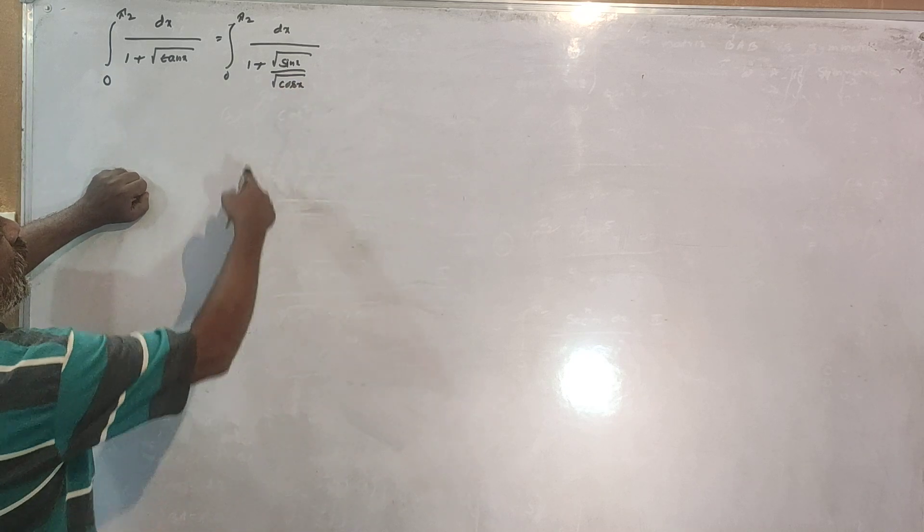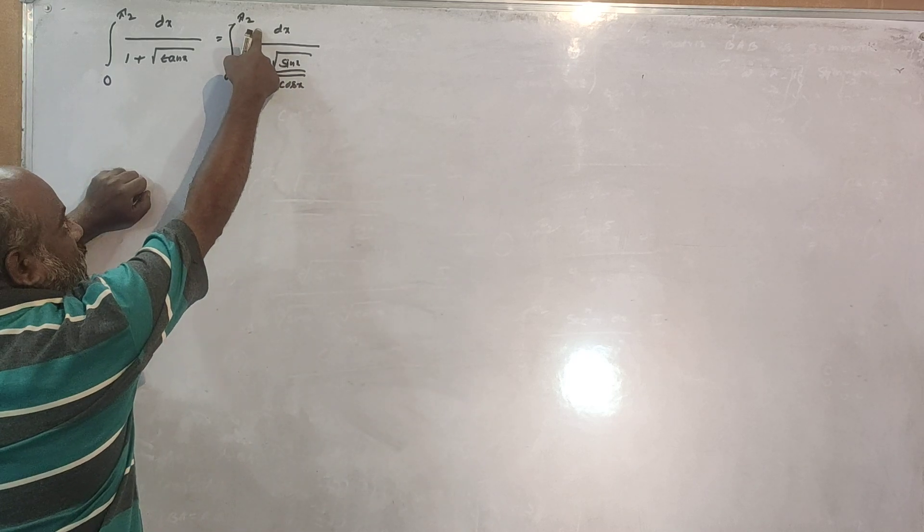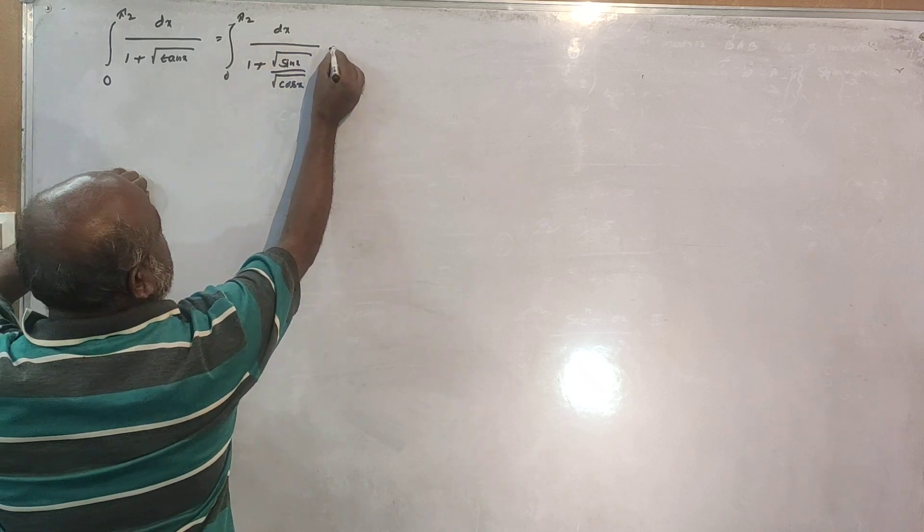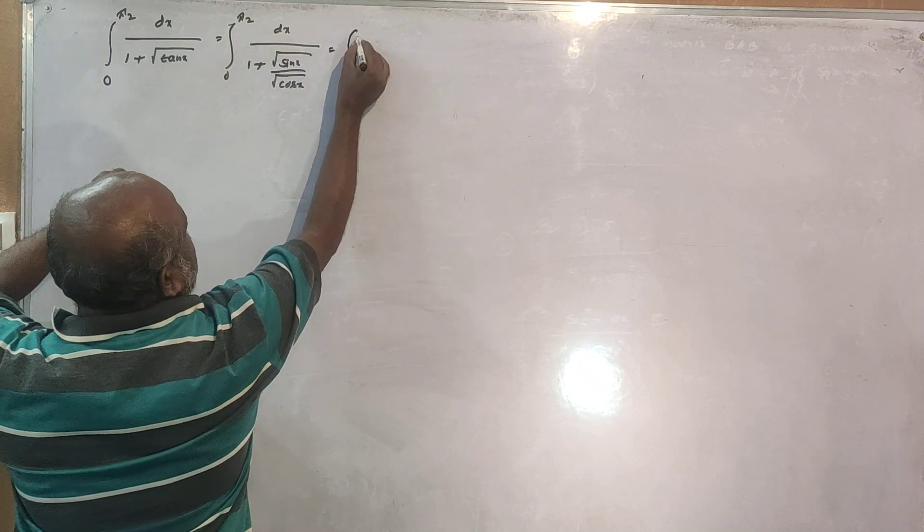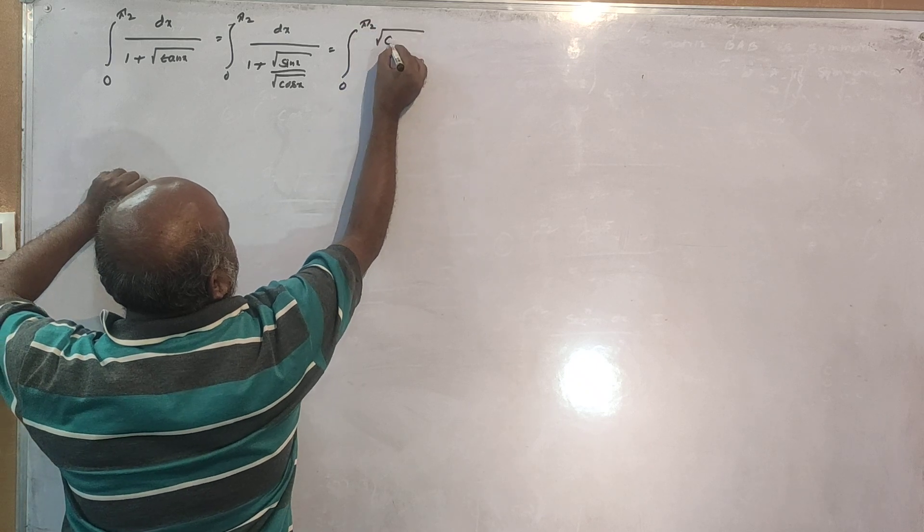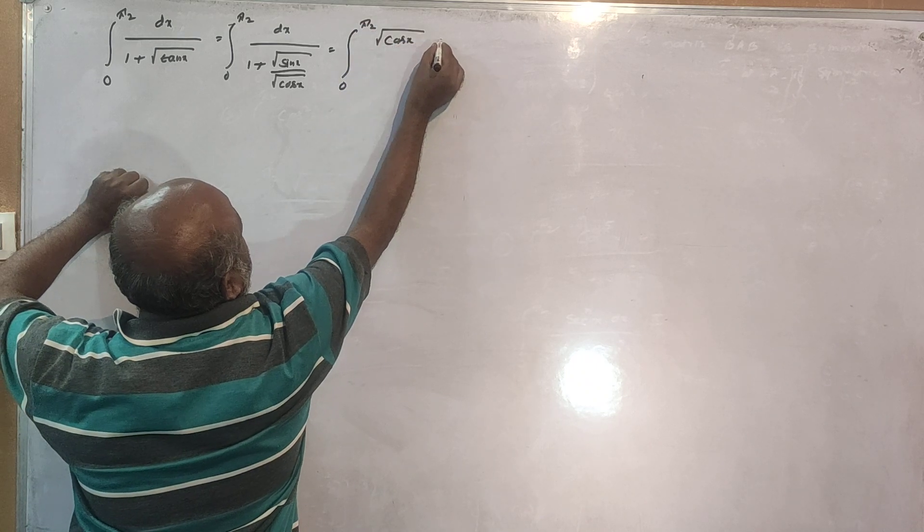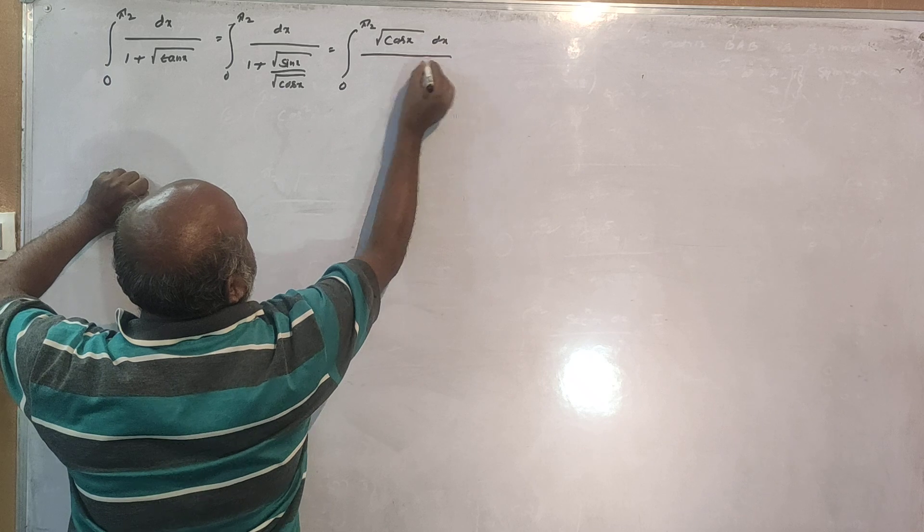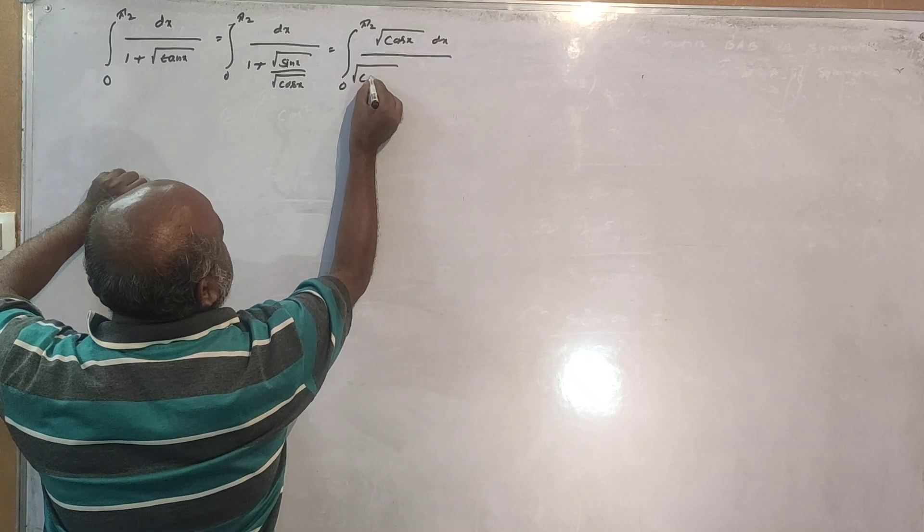This is the root of cos x divided by 1 plus root of sin x divided by root of cos x, into dx divided by root of cos x.